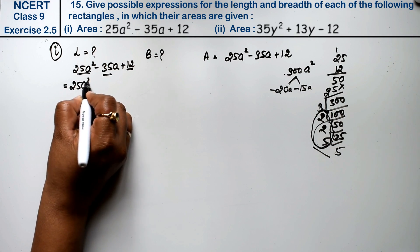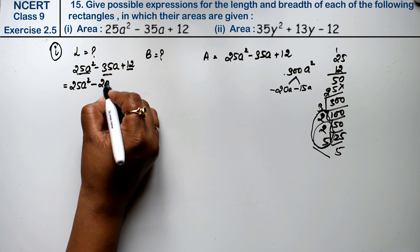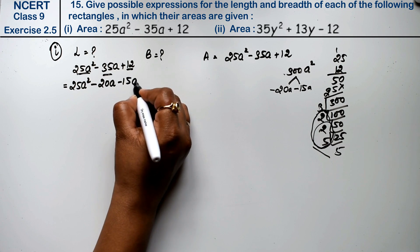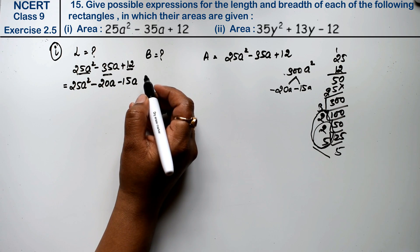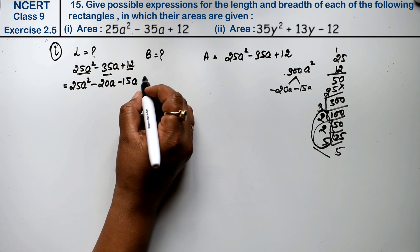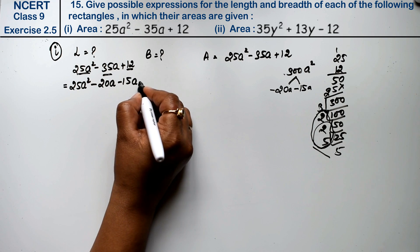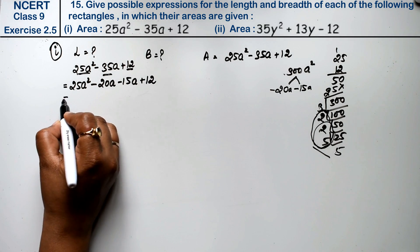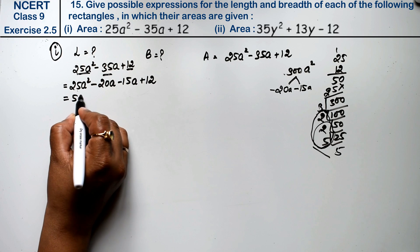So that means we split 25a² minus 35a plus 12 as 25a² minus 20a minus 15a plus 12. Now looking at these two pairs: from the first two terms, 5a is common, and from the last two terms, 3 is common.